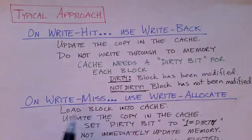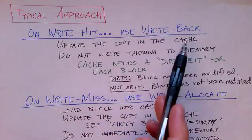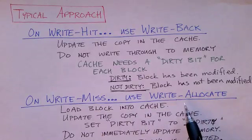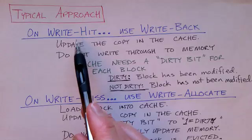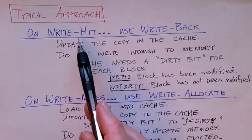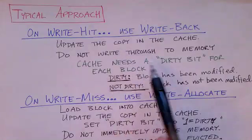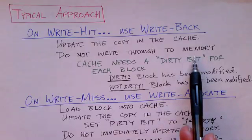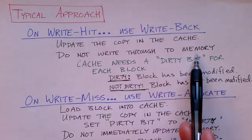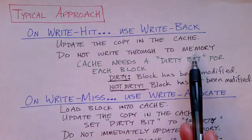Which strategies do caches actually use? Typically on a write hit they use write back, and on a write miss they use write allocate. So when there is a write hit, the CPU updates the copy in the cache but doesn't immediately notify memory that the cache block has changed — it saves that until the block is evicted. When a block is evicted from cache, if it's been updated it must be written back to main memory; if it hasn't been updated, there's no need to write it back — that would just waste time.